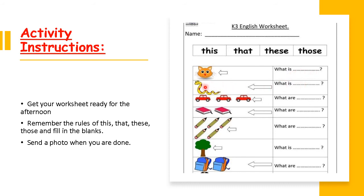Same with this one — how many snakes are there? Only one snake, so we need to choose between this and that. Is it close or far? It is far, so we choose that. We write: What is that? So this will be your activity for the afternoon. Please be sure to finish it.